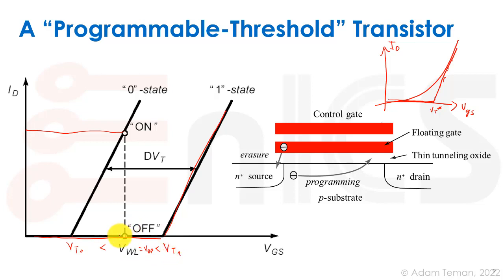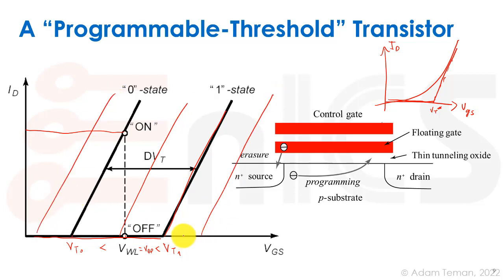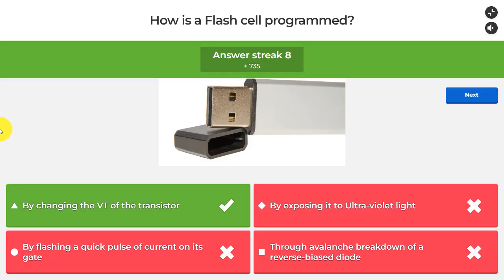Multi-level cells work by creating multiple intermediate VT states — for example, four levels within one transistor to store two bits. Other resistive devices like memristors are based on the same principle of programmable threshold. A flash cell is programmed by changing the VT of the transistor.